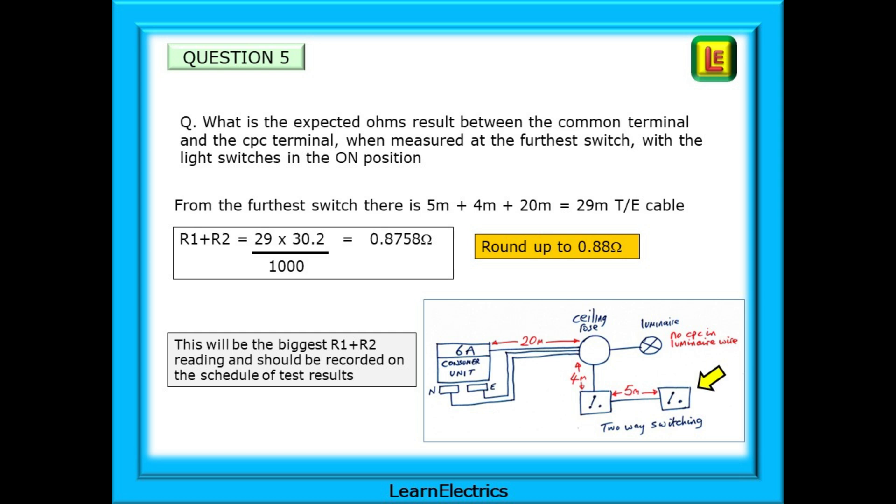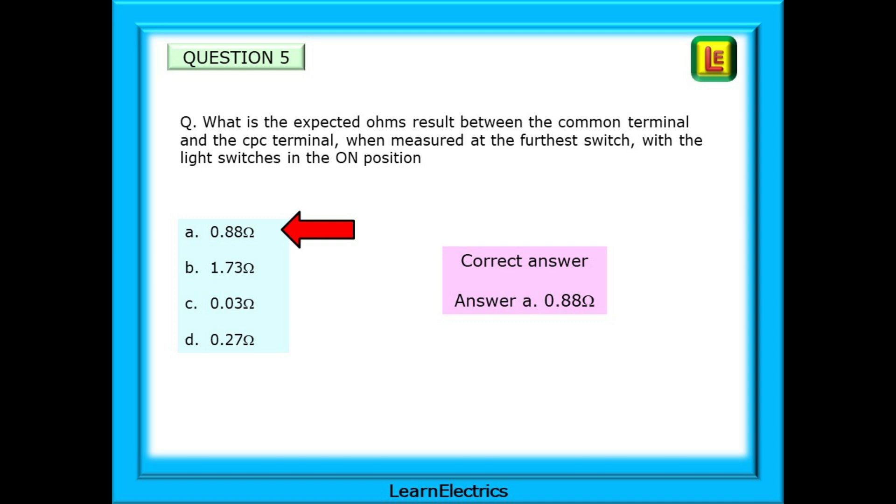This gives us 0.8758 ohms which can be rounded up to 0.88 ohms. The correct answer then is answer A 0.88 ohms. If this is the biggest R1 plus R2 for this circuit then we should record this on the schedule of test results.